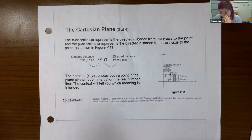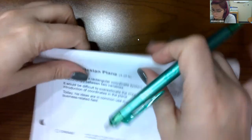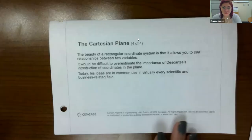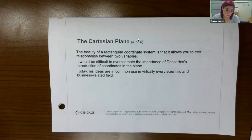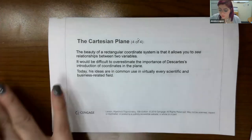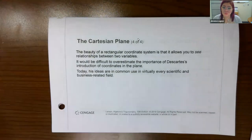The beauty of a rectangular coordinate system is that it allows you to see relationships between two variables. It would be difficult to overestimate the importance of Descartes' introduction of coordinates in the plane. Today, his ideas are used in virtually every scientific and business-related field. Think about when people are having meetings — they always want to see the production or the profits in the image of a graph, so they can see whether it's improving or declining. We definitely use this as visuals to represent data.